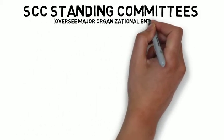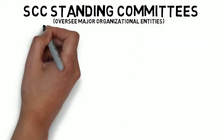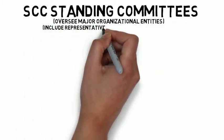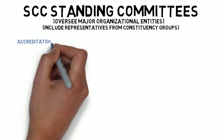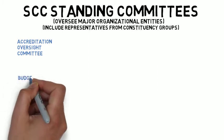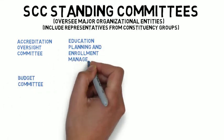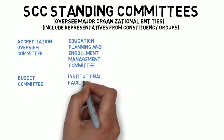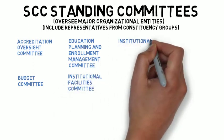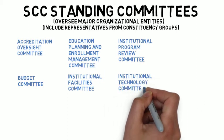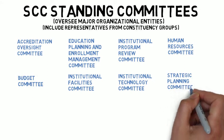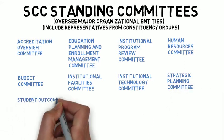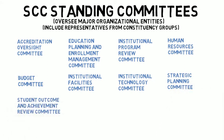The SCC maintains several standing committees that oversee all major organizational entities on campus. These committees include the Accreditation Oversight Committee, the Budget Committee, the Educational Planning and Enrollment Management Committee, the Institutional Facilities Committee, the Institutional Program Review Committee, the Institutional Technology Committee, the Human Resources Committee, the Strategic Planning Committee, and the Student Outcome and Achievement Review Committee.